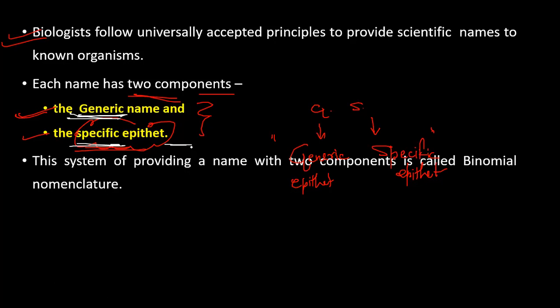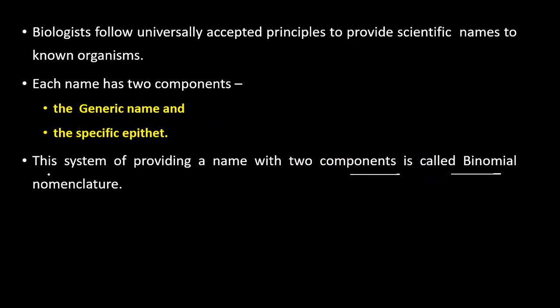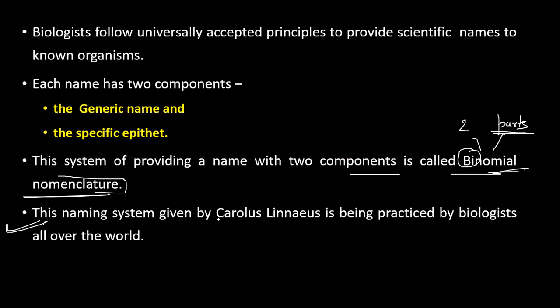This system of providing a name with two components is called binomial nomenclature — 'bi' meaning two, 'nomial' meaning naming. The two parts are the genus and the species, and this is the universally acceptable naming system.